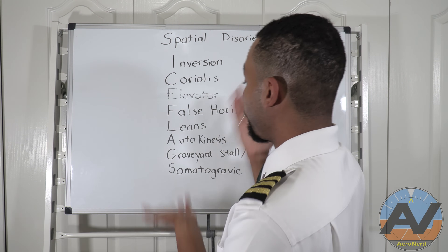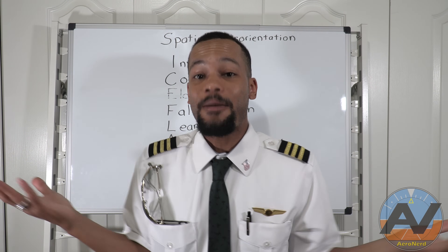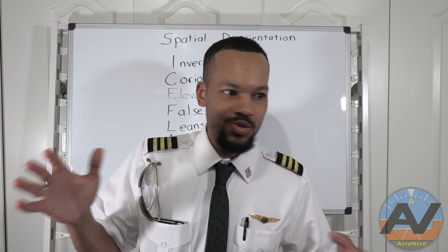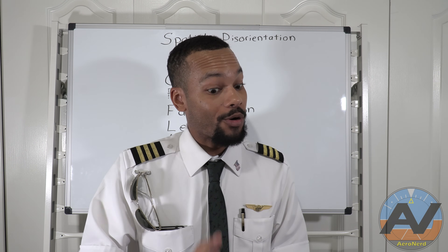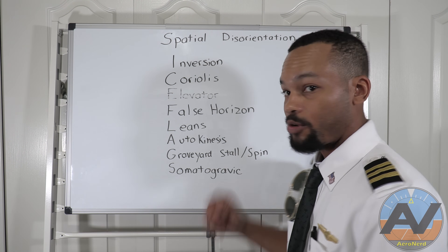So how do we cope with leans, inversion, and all these illusions? How do we prevent them from even happening? Well, by knowing about them. If you're experiencing leans and you see your altimeter going down toward the ground, before you pull up, look at your attitude indicator or turn coordinator and make sure you're not in a bank or turn. Wings level first, then pull — so you don't end up in a graveyard stall.